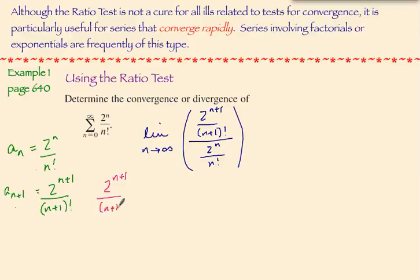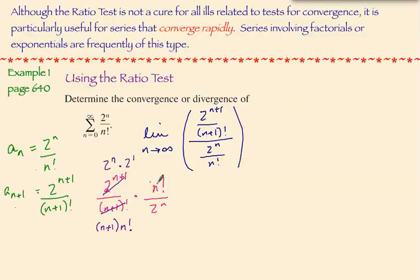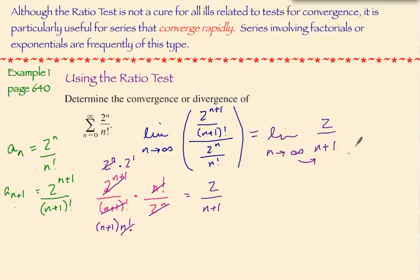Starting with 2 to the n plus 1 over n plus 1 factorial: remember that n plus 1 factorial can be rewritten as n plus 1 times n factorial, and 2 to the n plus 1 can be rewritten as 2 to the n times 2 to the 1. With those modifications, the 2 to the n's cancel, the n factorials cancel, and I end up with the simplified expression 2 over n plus 1. So I'm really looking for the limit as n approaches infinity of 2 over n plus 1. As I plug in infinity, this becomes 0, and the ratio test says that if the limit is less than 1 — which this certainly is — then the series converges.